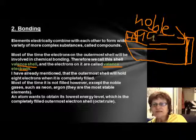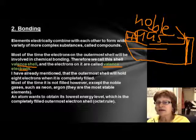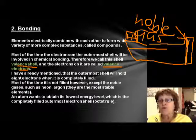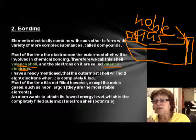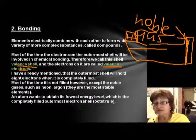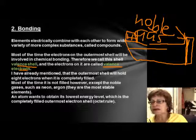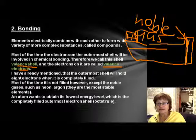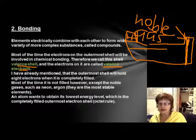Noble gases already have eight electrons, which means they do not participate in any chemical reactions. They already have eight valence electrons, so they do not want to do any kind of chemical bonding. They're the loners of the periodic table — already satisfied, always alone, and happy that way.